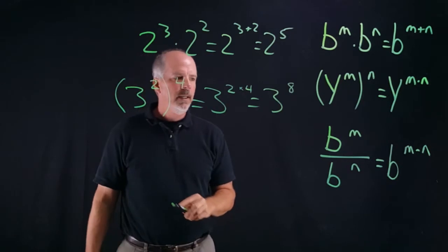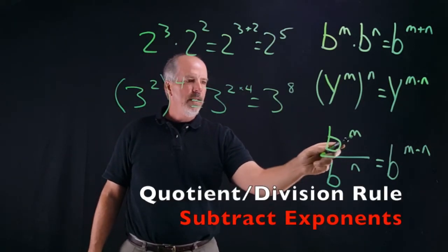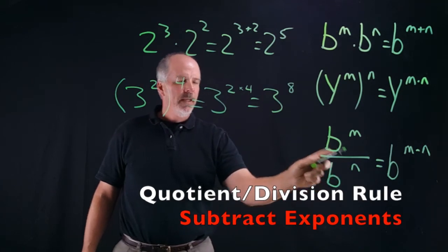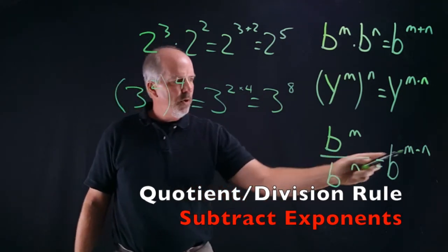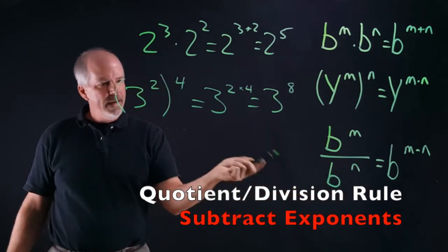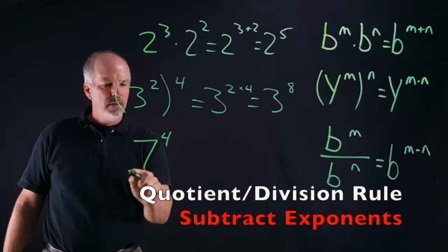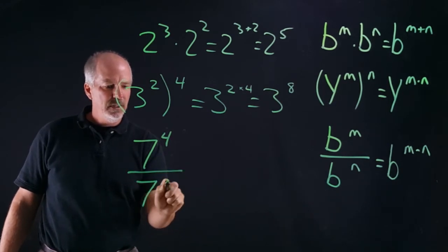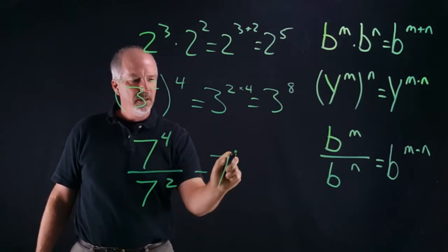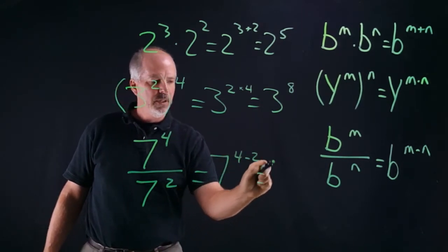Our next example is division. So b to the m divided by b to the n — in this case you're going to subtract the exponents. So if we have seven to the fourth divided by seven to the second, that's going to equal seven to the four minus two, which equals seven to the second.